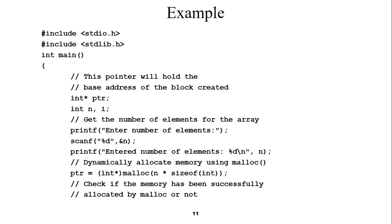This is the program related to dynamic memory allocation. First we have two header files: stdio.h and stdlib.h — I will explain why we included stdlib.h. We have started with the main function. Here we are going to declare two variables: one is of pointer type and the other two are simple integer variables. First we have created int *ptr, which is a pointer variable, and then two variables int n and i.